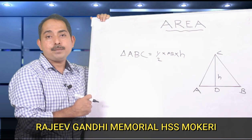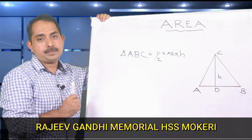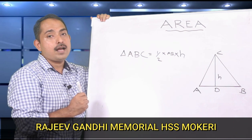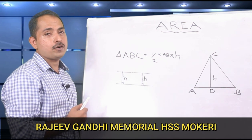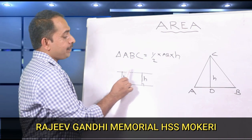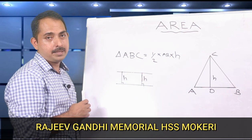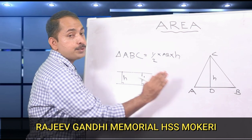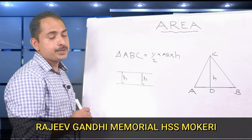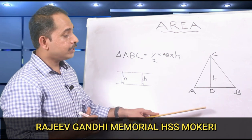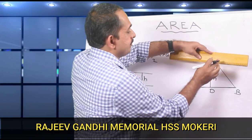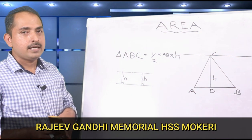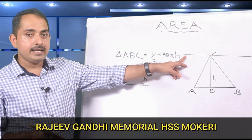If these measures are fixed, then the new triangle will have the same area as triangle ABC. To fix the height, we use the property of parallel lines. We know that for parallel lines, the distance between the lines is the same at any point. We use this property by drawing a line parallel to base AB through the point C. The distance between AB and this line is the same at any point.